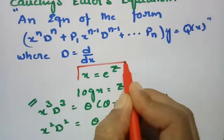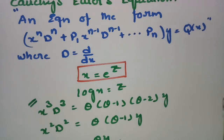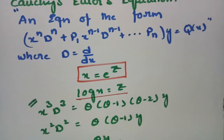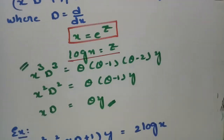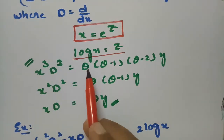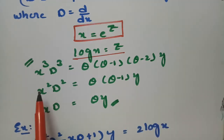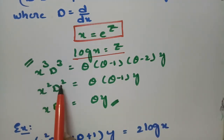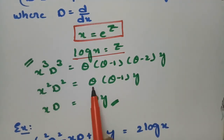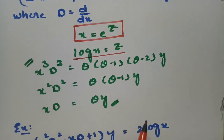In place of x, we keep e^z, and in place of log x, we keep z. The key substitutions are: x³D³ is replaced by θ(θ-1)(θ-2)y; x²D² is replaced by θ(θ-1)y; and xD is replaced by θy.